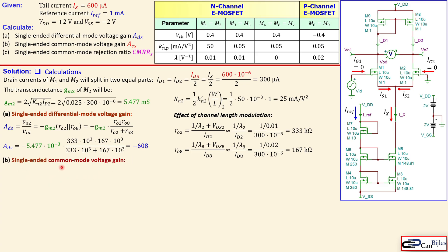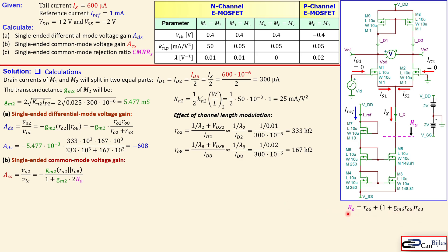Moving to the single-ended common mode voltage gain, we look at vo2/Vic, where the gates of M1 and M2 are connected together to a common source Vic. The gain formula includes a factor of 2·Ro in the denominator, where Ro is the resistance looking into the drain node of M5. This is given by the cascode expression involving ro5, gm5, and ro3.